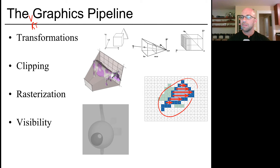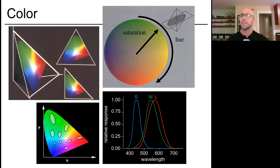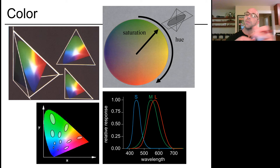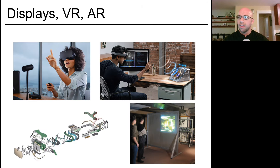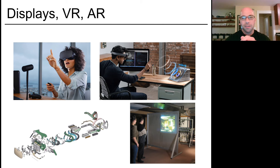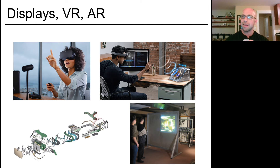Finally, this course concludes with a grab bag of other important graphics topics. We'll talk about color — both the physiology of your eye at an extremely coarse level, as well as some of the typical systems we use to capture and display color content. We'll also talk a little bit about hardware — both displays such as computer monitors, virtual reality, and augmented reality — as well as a tiny bit about how your graphics card is architected to carry out graphics computations extremely efficiently.